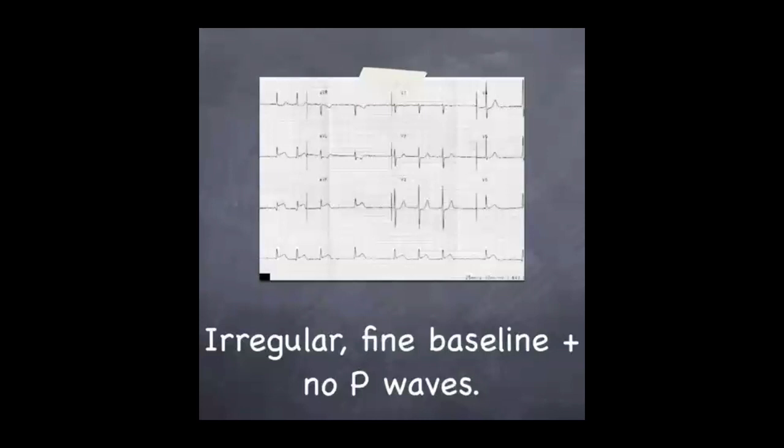Here's an example of an ECG of a patient with atrial fibrillation. The three features are irregular QRS complexes, a fine baseline, and lack of P waves. Notice on this ECG that the patient has a degree of ST elevation, perhaps representing poor compensation for the rate.